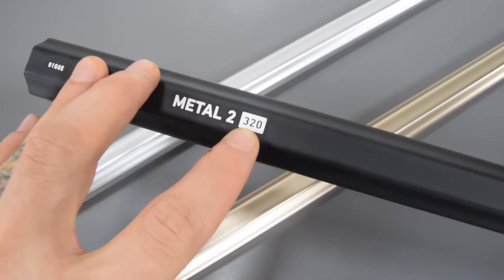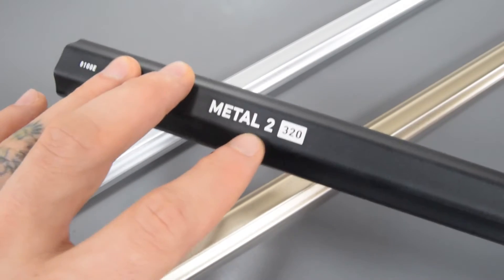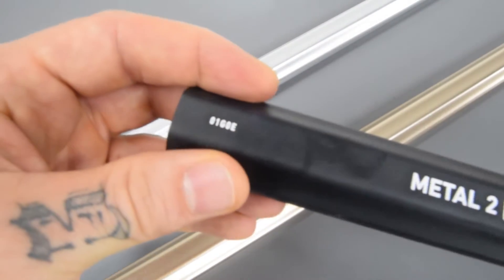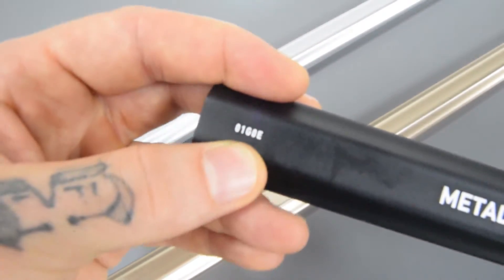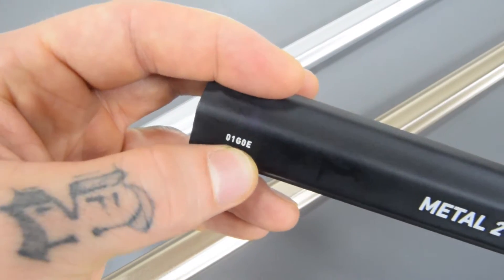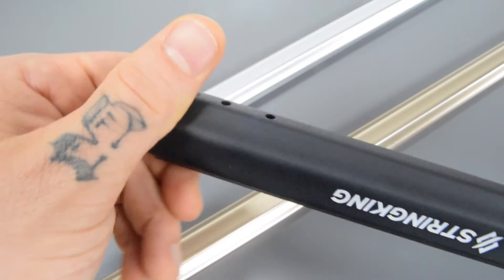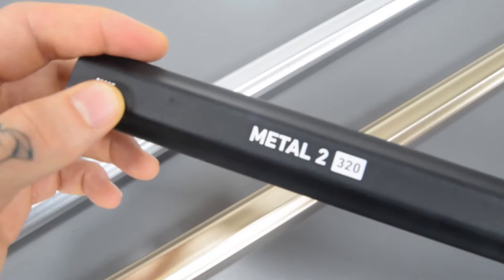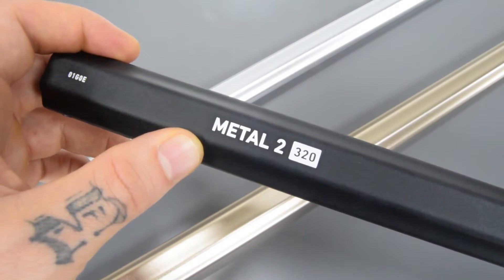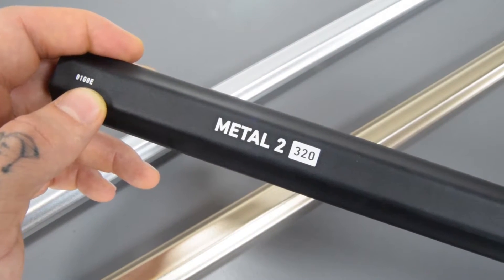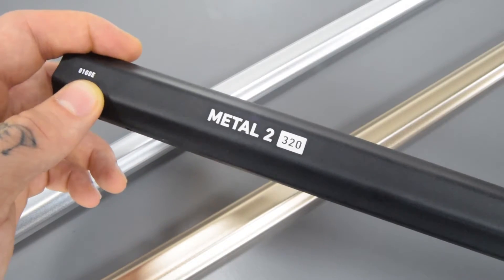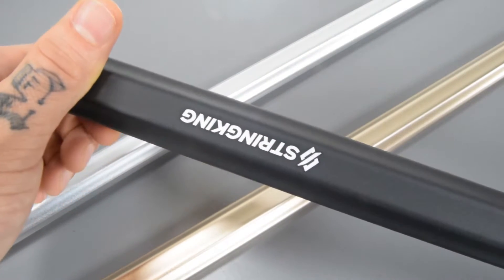And then if I can bring this in you can see you also get serial numbers, serial codes if you will for the shafts. That just improves the warranty process, allows them to track the manufacturing, it makes it a smoother process all around for the customer, God forbid you have a warranty issue.